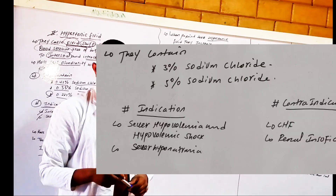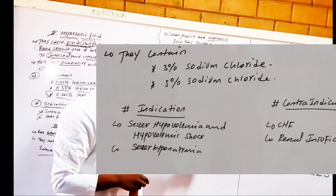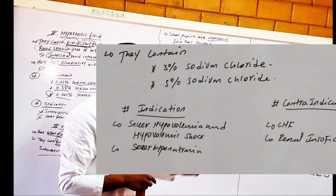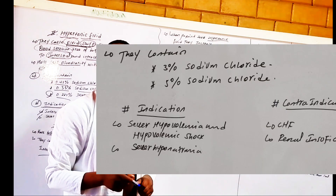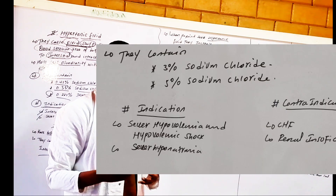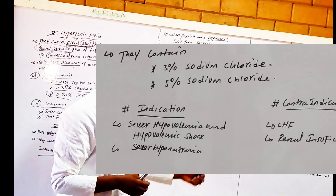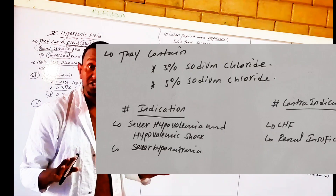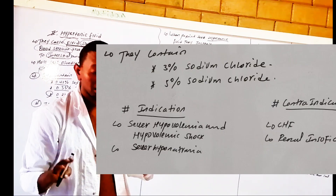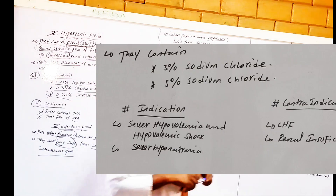Contraindications for hypertonic fluid include congestive heart failure (CHF) and renal insufficiency. These conditions are contraindicated because hypertonic fluid can worsen fluid overload in such patients.